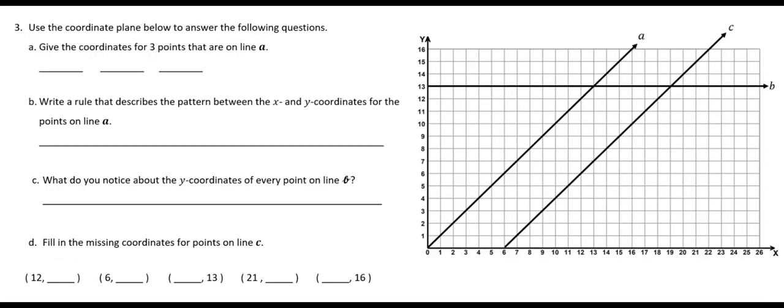Now I have a new graph. On this one, you can see we have two lines already drawn. We have line A and line C. The directions say to give the coordinates for three points that are on line A. So I just need to follow along line A until I see where the line intersects a point on the graph.